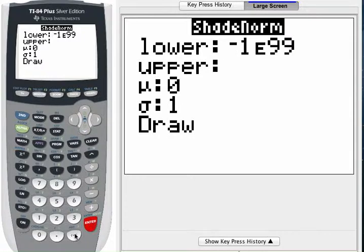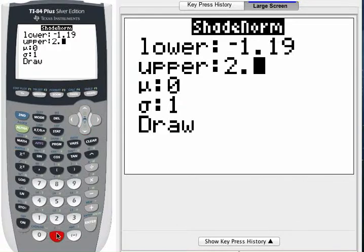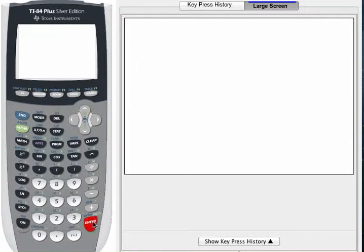The lower one was the Z score of negative 1.19. Press the down arrow. Your upper boundary was 2.14. Then here the calculator asks for a mean or a standard deviation. The truth is we're using Z scores, so the mean is 0, the standard deviation is 1. Those are preset in the calculator. You don't need to change those, so you can arrow past those and highlight draw and press enter.